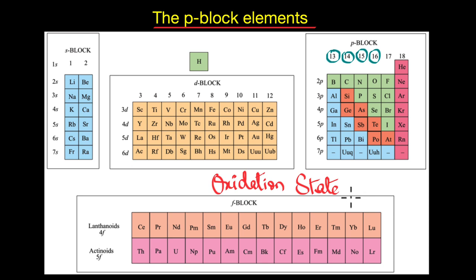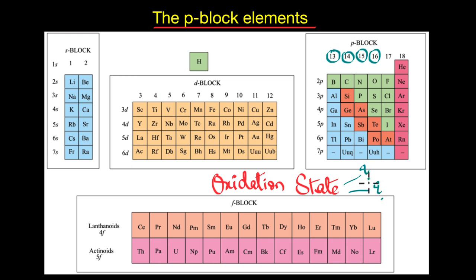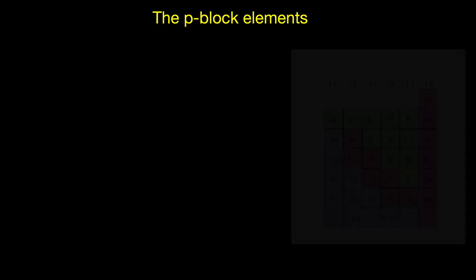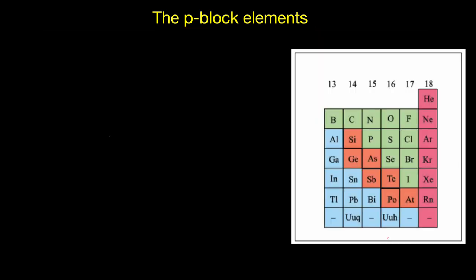So what are we expecting from this video? Well, we will see how oxidation state varies across the p-block and why certain elements are more comfortable or stable in a particular oxidation state than others. To understand this, let's look at one of the groups of the p-block — let's begin by looking at group 13 elements.